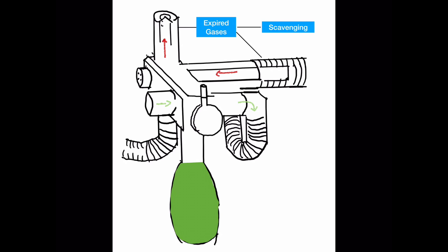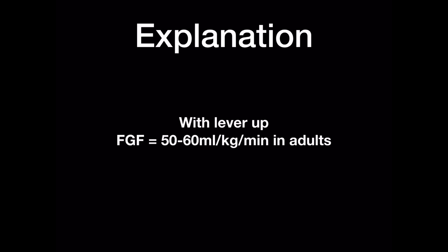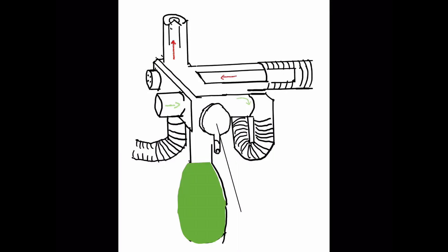During spontaneous ventilation, the fresh gas flow required in adults is about 50 to 60 mL per kilogram per minute. For children less than 25 kilograms, it is about 3 litres per minute. This is a pretty efficient system.